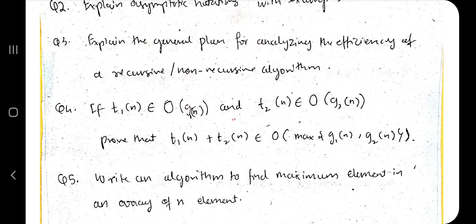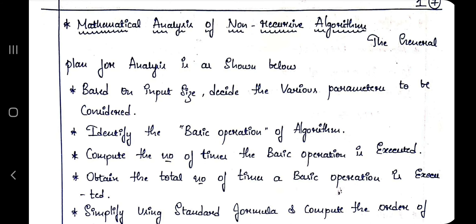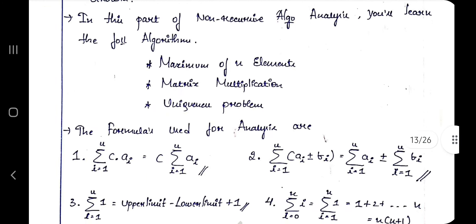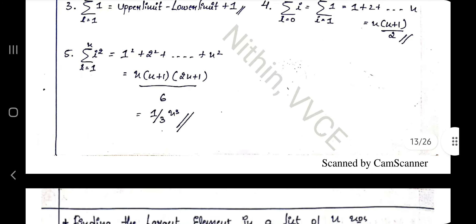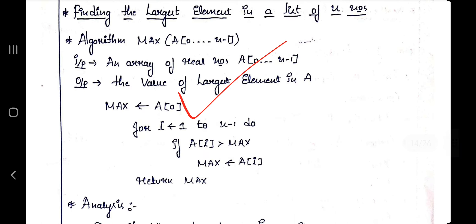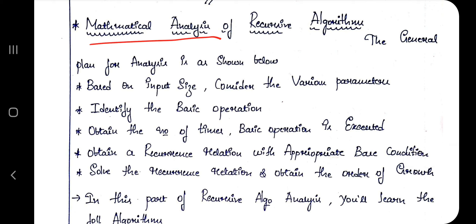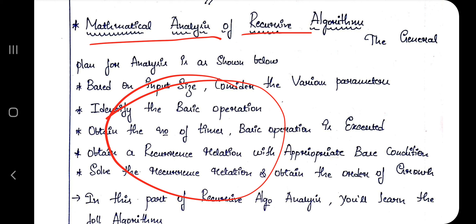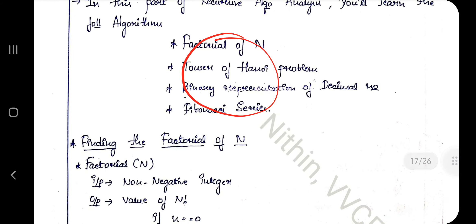The third question is: explain the general plan for analyzing the efficiency of recursive and non-recursive algorithms. Coming to page number 13, you can find the mathematical analysis of a non-recursive algorithm — the steps you have to mention, followed by an example. On page number 17 you can find the answer for mathematical analysis of a recursive algorithm, including the steps and examples. Include an example to show how to mathematically analyze the function; that will increase your marks, especially for an 8-mark question.